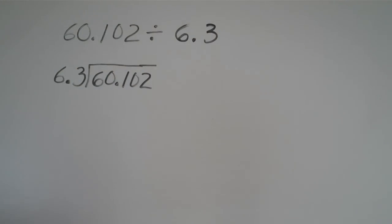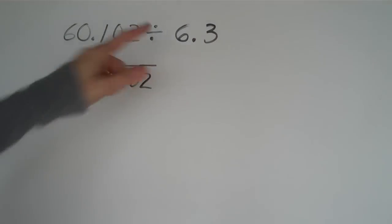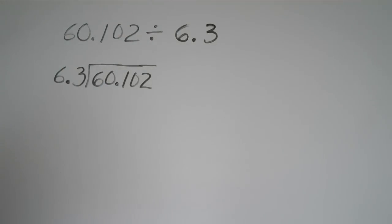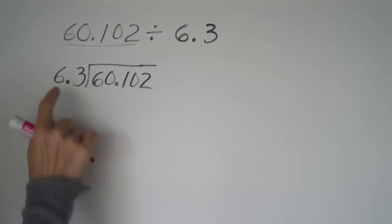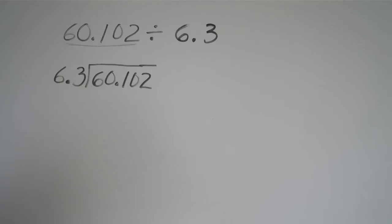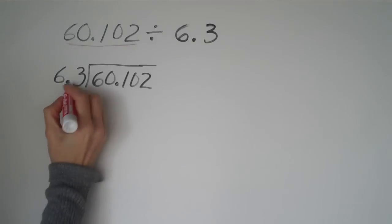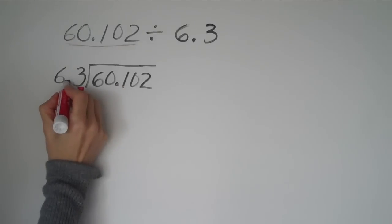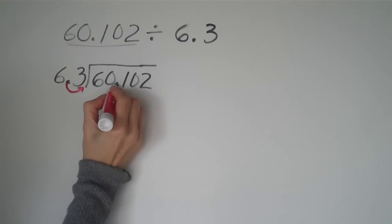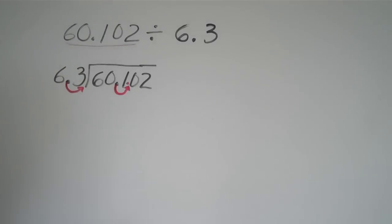And so we have 60.102 divided by 6.3. I went ahead and I put the top dog, which is the first number, this top dog, I put him in the doghouse. And the next step that I'm going to do is simply just move my decimal over so that this number right here is a whole number. So I need to move this decimal once. And then I'm going to have to move this decimal once and add it in there.